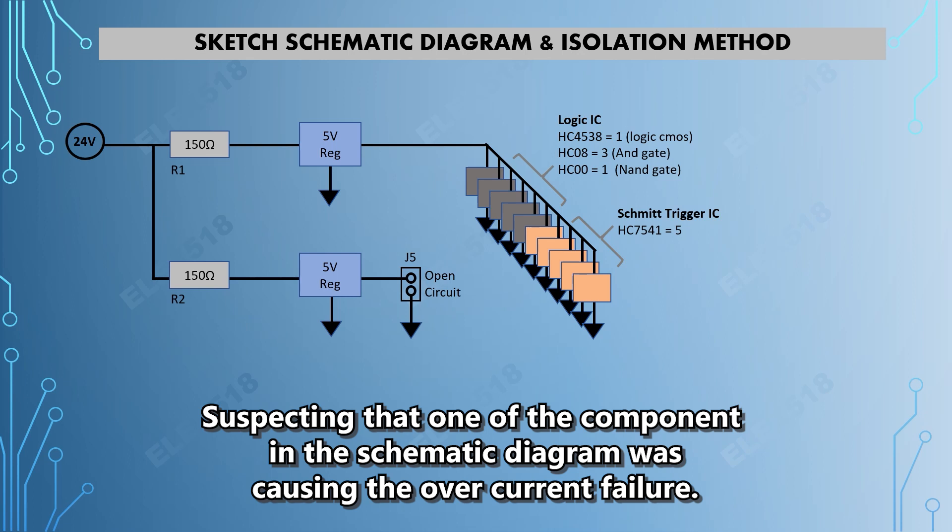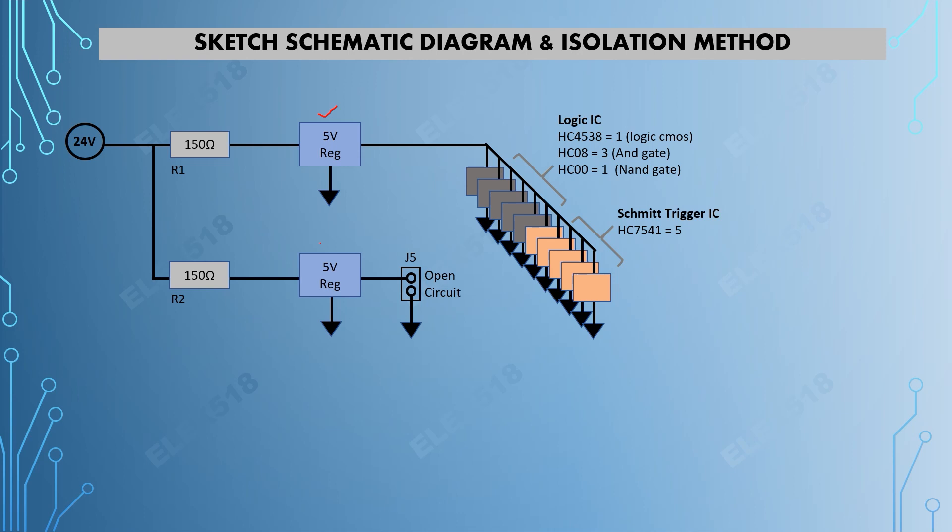As you can see, we have two 5 volt regulators, and each regulator has a limiting resistor R1 and R2. So the second thing that I did was to measure the current from this line, from the R2 line, and also measure the current from R1.